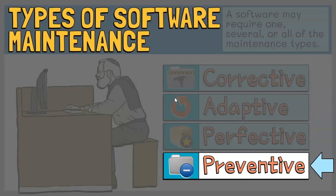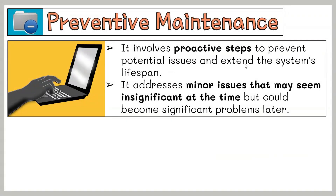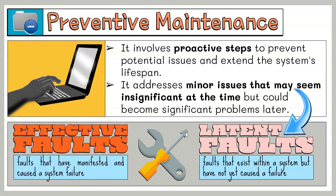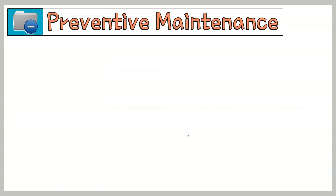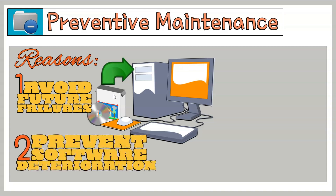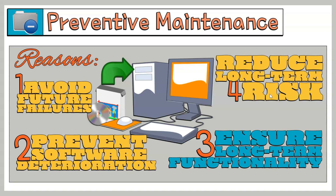The last type of software maintenance is called preventive maintenance. It involves proactive steps to prevent potential issues and extend the system's lifespan. Preventive software maintenance addresses minor issues that may seem insignificant at the time but could become significant problems later. These are called latent faults, which need to be detected and corrected to prevent them from becoming effective faults. Preventive maintenance is performed to avoid or reduce future failures, prevent software deterioration, ensure the software continues to function as desired for as long as possible, and reduce the risks associated with long-term software operation, making it more stable, understandable, and maintainable.